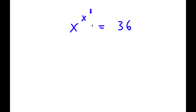In this problem, I have x to the power of x to the power of 3 is equal to 36. To solve this problem, the first thing I'm going to do is take the power of 3 on both sides.